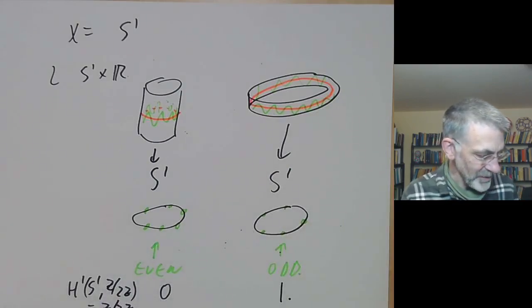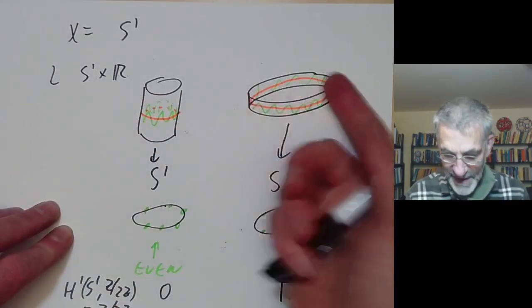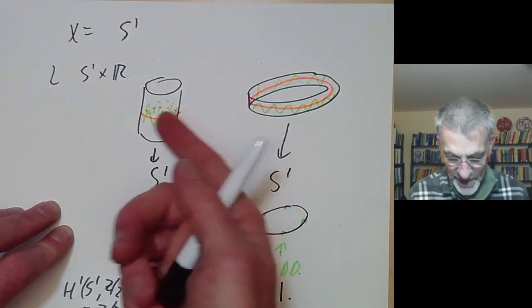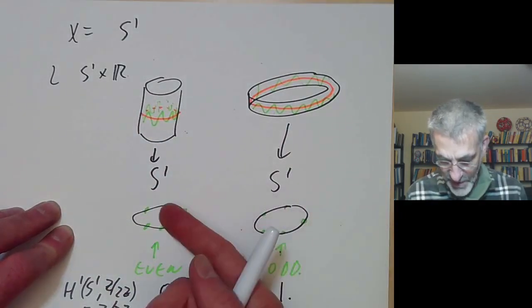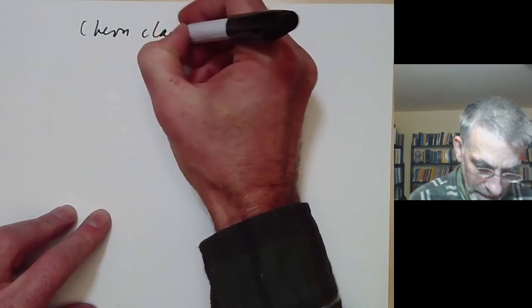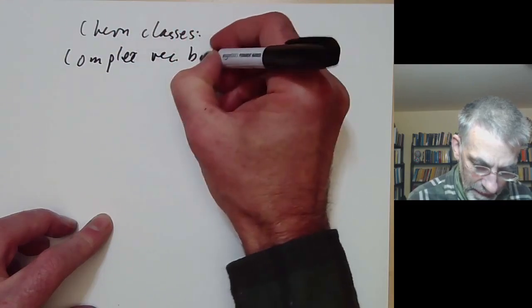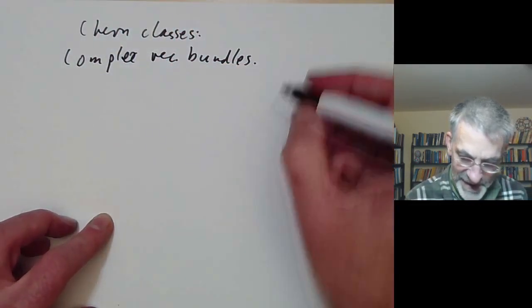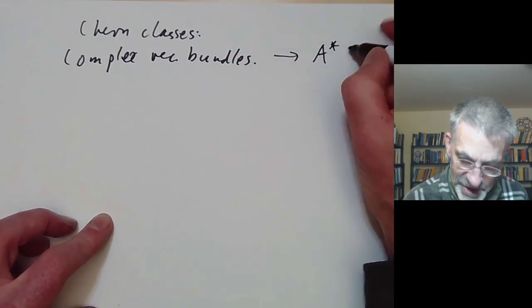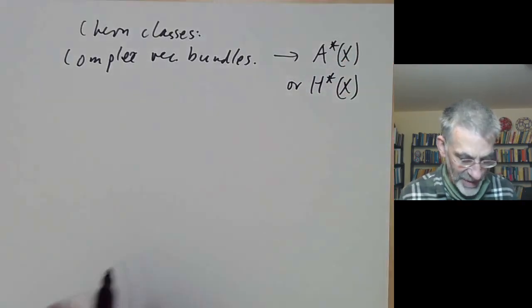We can distinguish these two line bundles over S^1 by counting the number of zeros of a generic section, which is always either even or odd. The whole theory of characteristic classes is really just a generalisation of this fundamental example: if you've got a line bundle or vector bundle, you can look at zeros of its sections, and these give you homology or cohomology classes. Now let's look at Chern classes, for complex vector bundles where the fibre is a complex vector space. These take values either in the Chow ring if you're an algebraic geometer, or the cohomology ring in differential geometry.